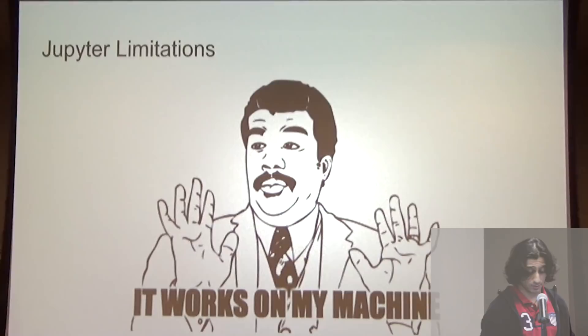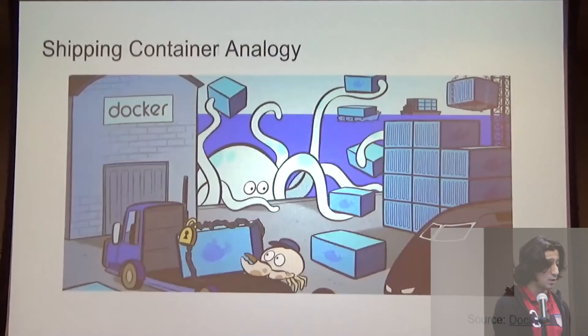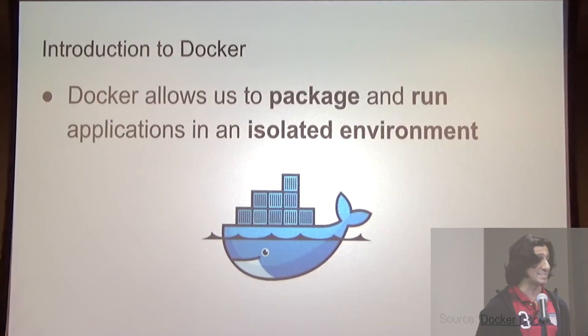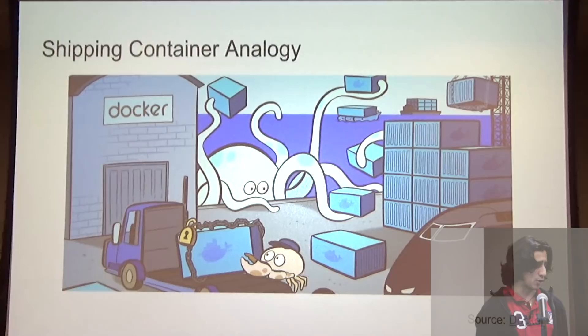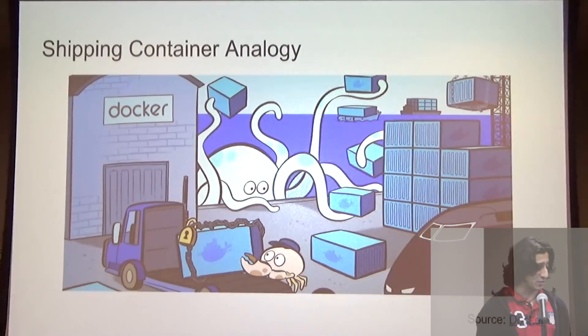Docker is a platform that allows us to package and run applications in loosely isolated environments called containers. We can use the shipping container analogy to understand how Docker works. Shipping containers standardized the logistics industry — it didn't matter what was inside. We can send them by boat, train, or truck, and we have the infrastructure at all these facilities to handle these standardized containers. With Docker, we can package our code plus everything needed to run it in an isolated container, and since these software containers are standardized, we can pass them into different environments without worrying if they'll run.